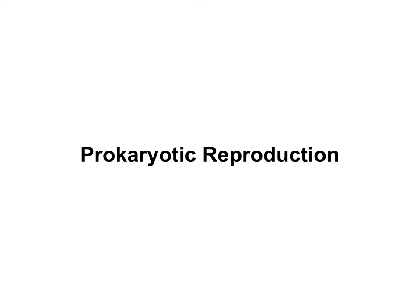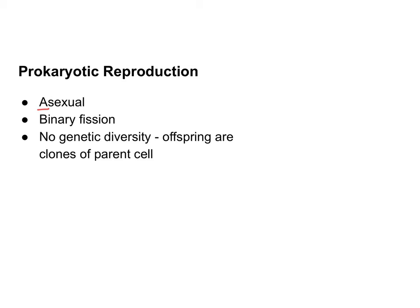In this video, we're going to talk about how prokaryotes make more prokaryotes. Prokaryotes reproduce asexually. When you see the letter A before a word, it typically means without. Prokaryotes do not have sex.